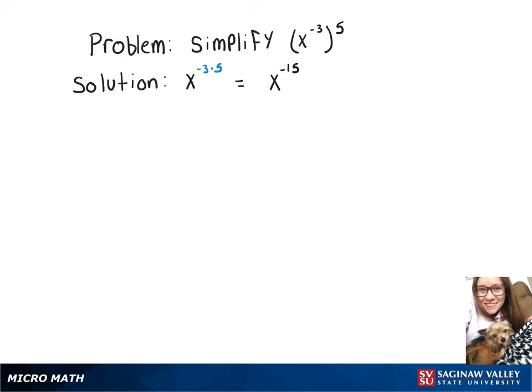Now since we have a negative exponent, that can go on the bottom of our fraction. So our final answer is going to be 1 over x to the 15.